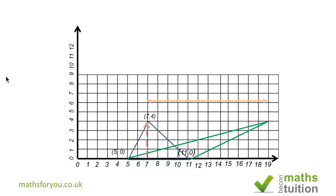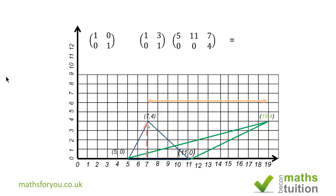The green triangle is the triangle after transformation by shear. To confirm using the matrix: the identity matrix [1,0; 0,1] becomes [1,0; 3,1] because our scale factor is 3. Multiplying the shear matrix by the respective vertex coordinates gives (5,0), (11,0), and (19,4), confirming what we have in the green triangle.